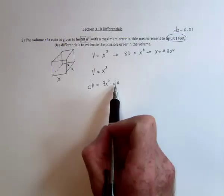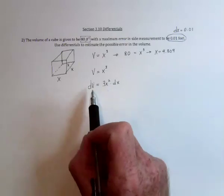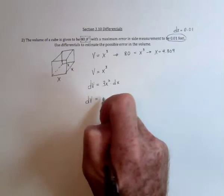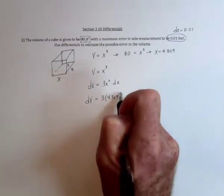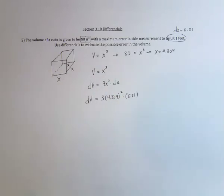And we've got this is 0.01. We've got this is 4.309. And so then we can say the change in the volume is approximately that much.